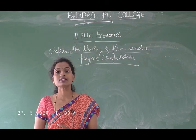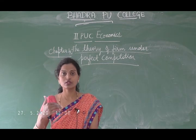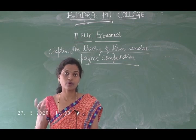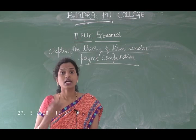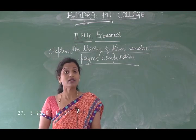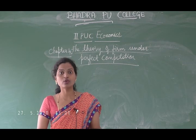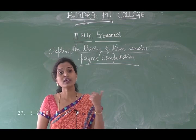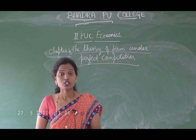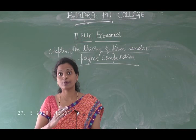In previous chapters we understood that a firm converts raw material into output and sells it in the market to generate revenue. We studied production function, short-run cost, long-run cost, law of diminishing marginal product, and graphical representations. Now we will understand how a firm decides the quantity of production based on the market environment.